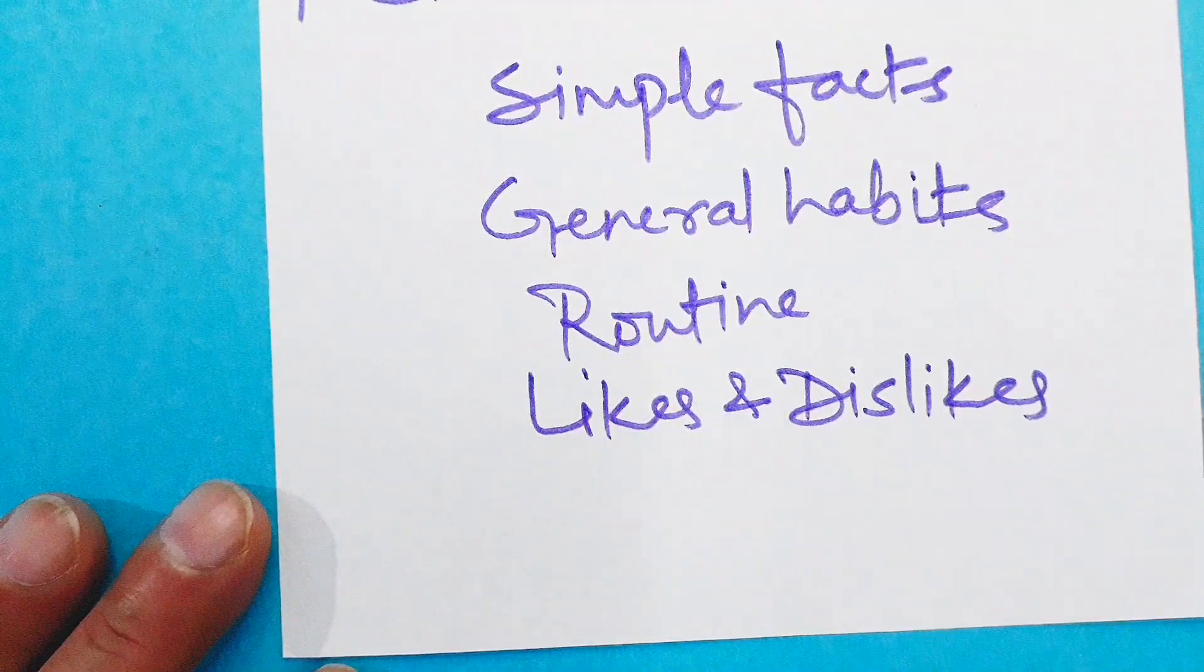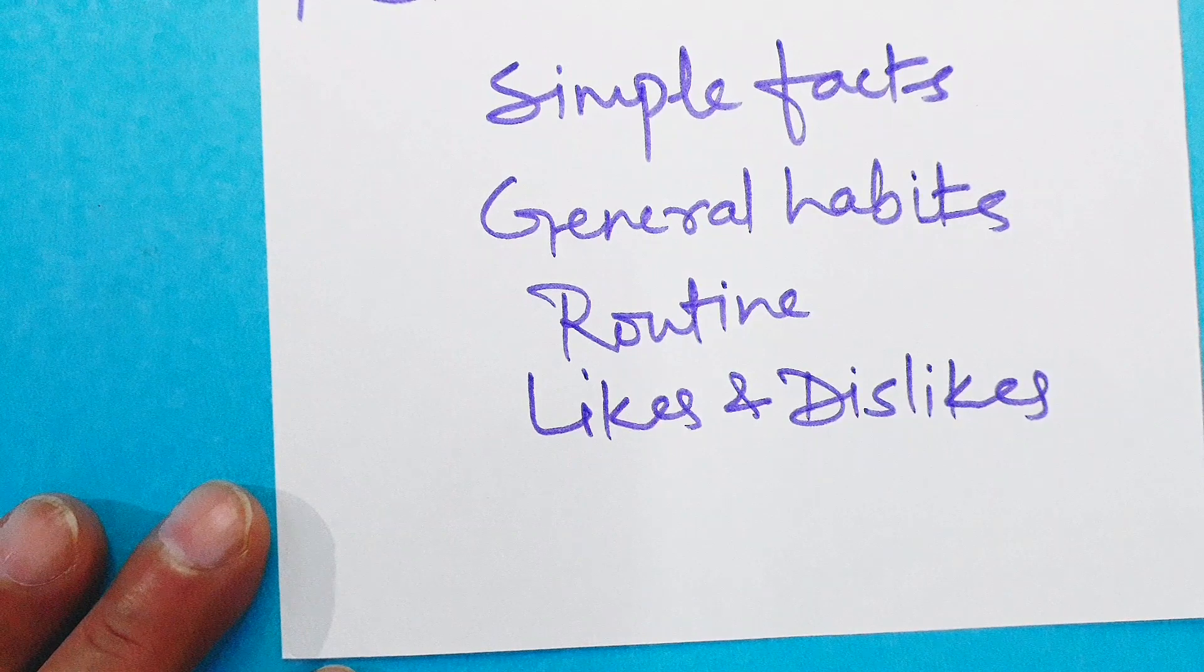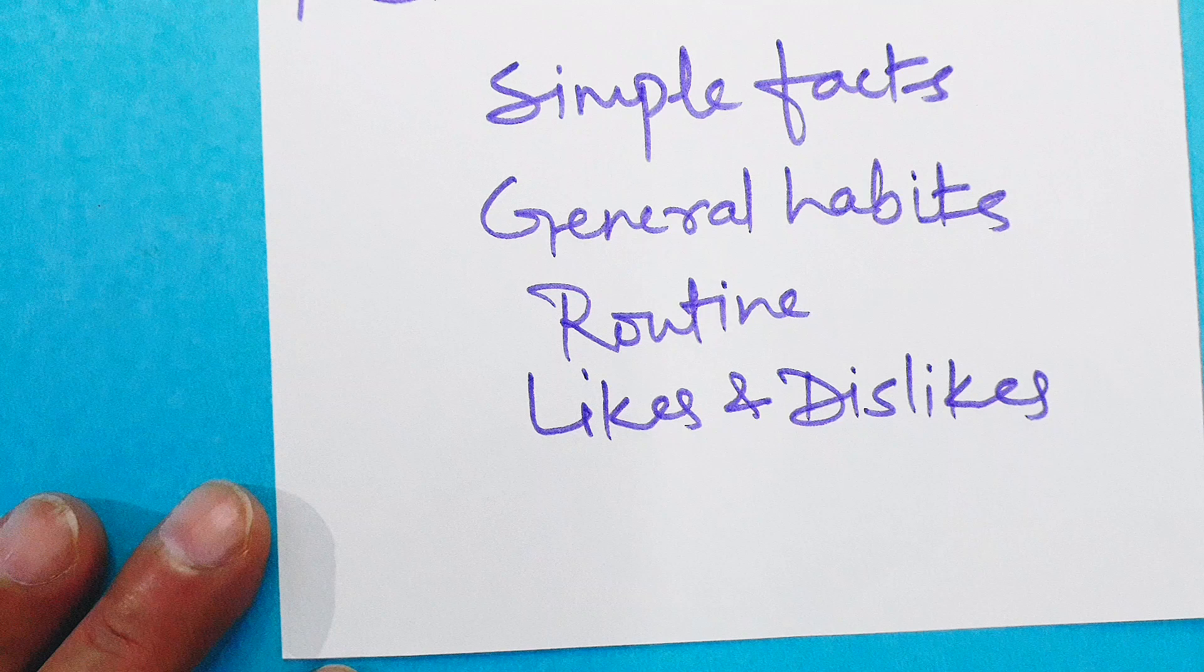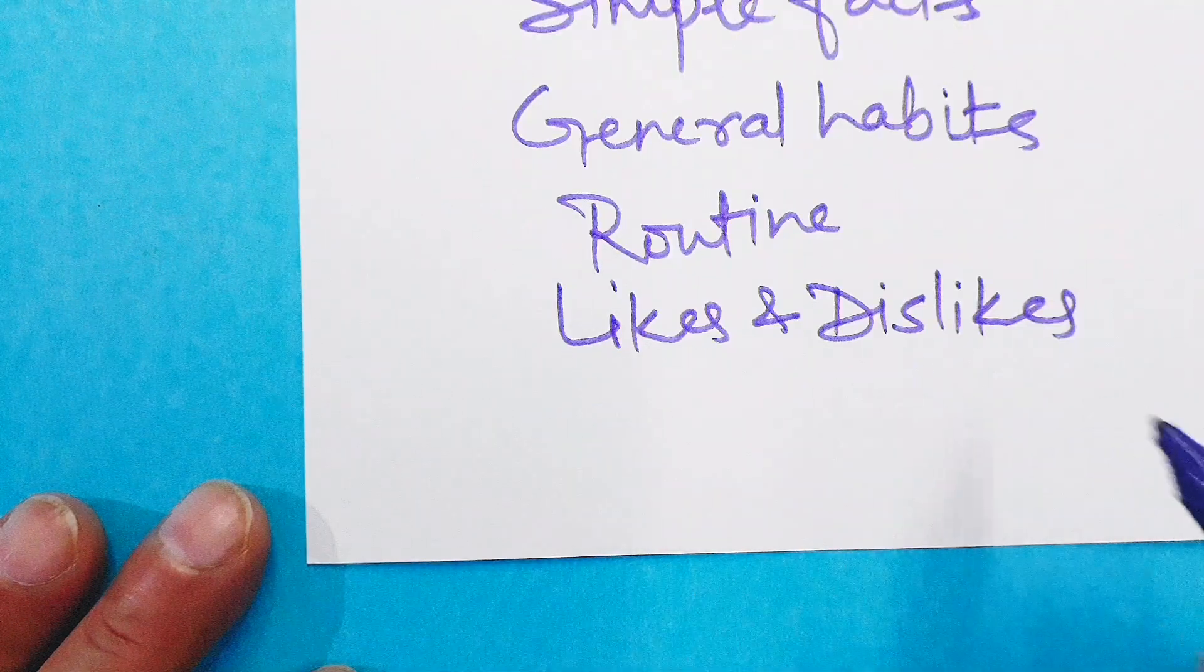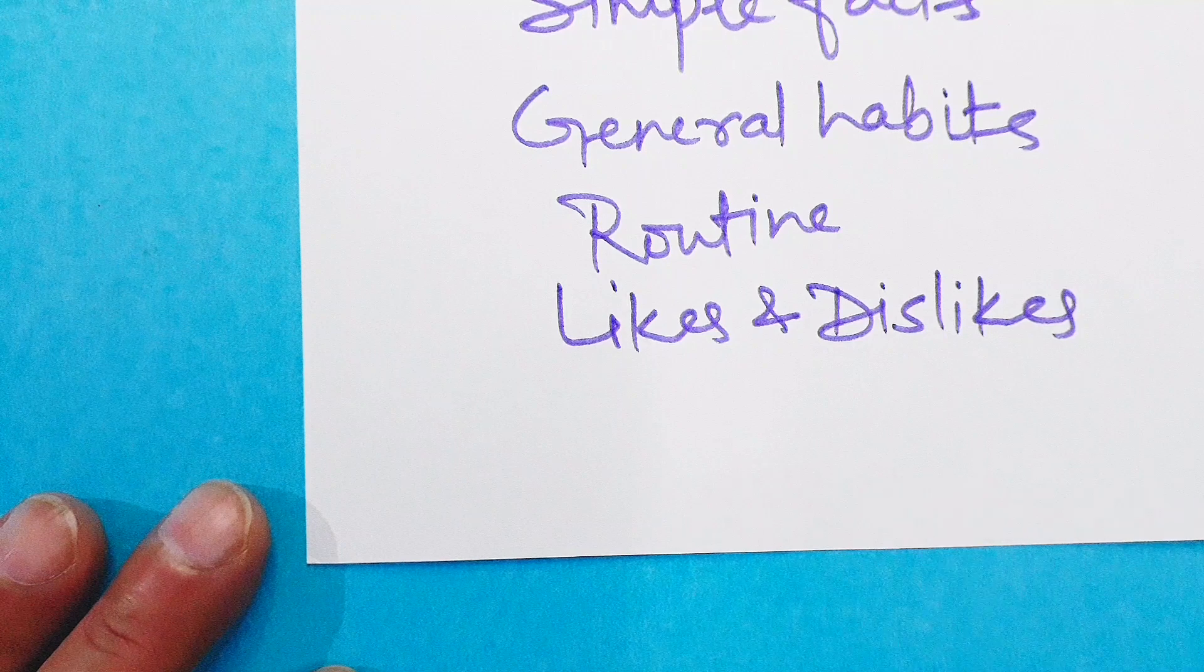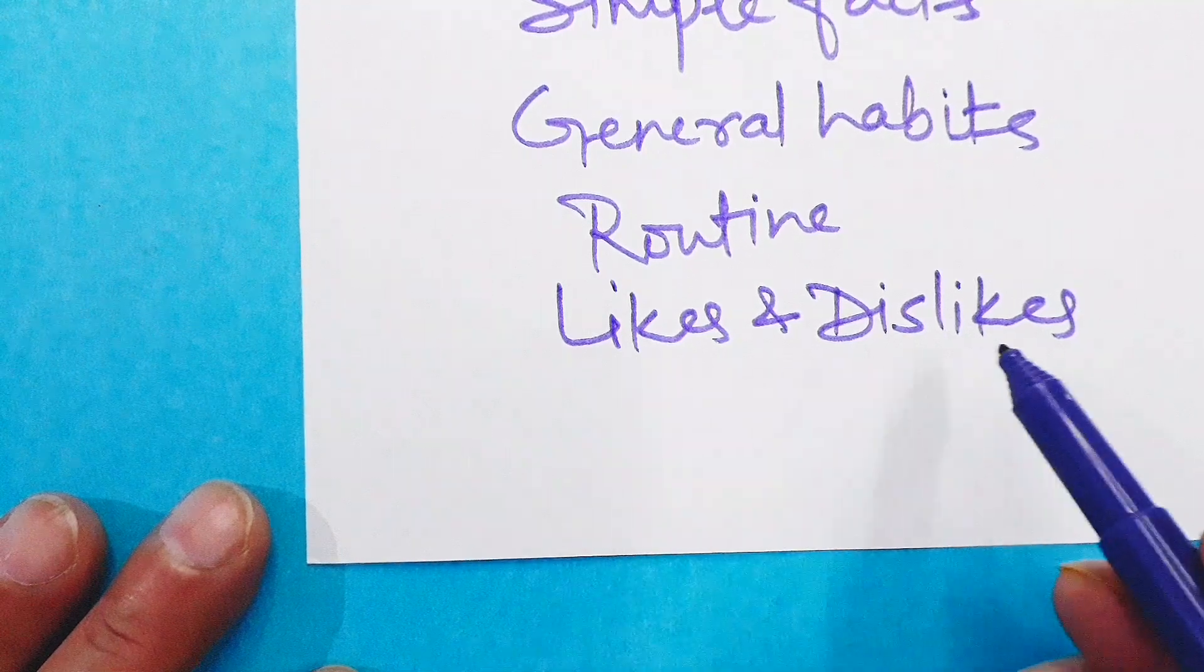Next, routine: He goes to school five days a week. He takes English classes twice a week. These things are routine. Now likes and dislikes: I like watching TV. I don't like watching TV. These are likes and dislikes.